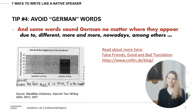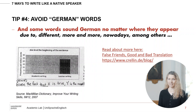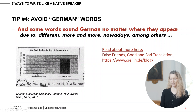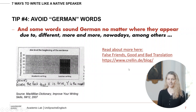There are other German words to avoid no matter where they appear — beginning, middle, or end of your sentence. These include 'due to, different, more and more, nowadays, and among others.' They have a very high frequency in German but a low frequency in academic writing, as shown in graphs from the Macmillan dictionary. In academic writing, 'due to' has very low frequency; you could use 'given' or 'since' instead. If you're interested in more of these Germanisms, there's a nice blog called 'False Friends: Good and Bad Translation' that you might find useful.